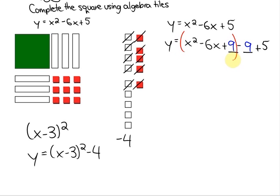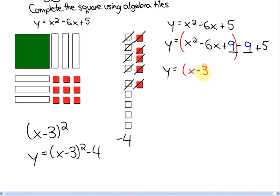And what you can see is this trinomial here is x minus 3 squared and then this part here, when we simplified it became minus 4. So there's our completed square.